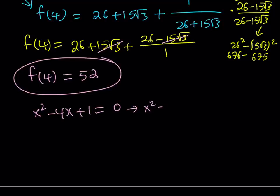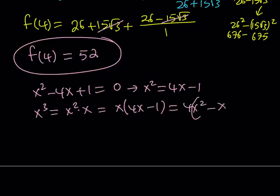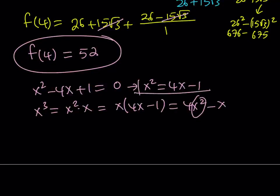So from here, we can isolate x squared, something that we a lot of times do with polynomials. And then I want to evaluate x cubed. Obviously, x cubed is going to be x squared times x. And I can just replace x squared with 4x minus 1. And then distribute. This gives me 4x squared minus x. And again, I can replace x squared with 4x minus 1, because that's my formula. That's going to give me 4 times the quantity 4x minus 1 minus x.